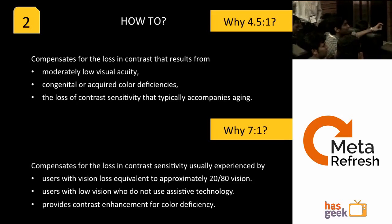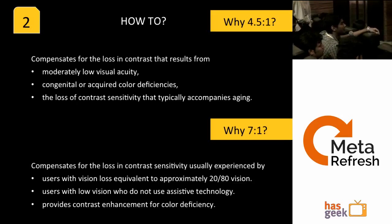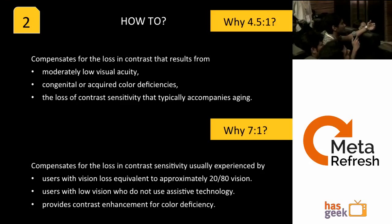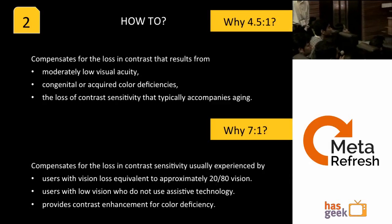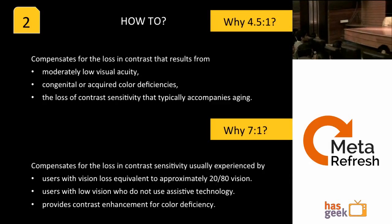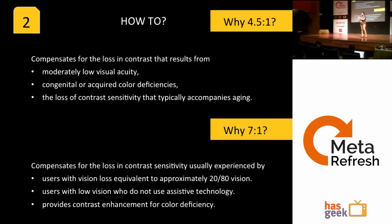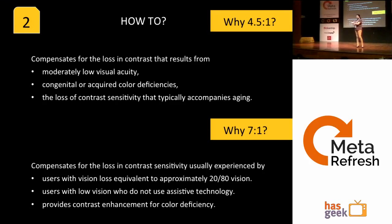A question was raised: for different mobiles, screen quality differs — we measure contrast ratio in terms of RGB values processed by the graphics processor, but how it looks visually differs. The 4.5:1 minimum has been tested by the W3C and determined to work for any mobile device's contrast needs.